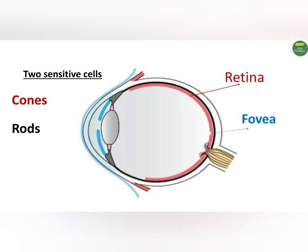Since the eye is linked to the brain, all information from the eyes is coordinated via the optic nerve, which transmits signals from the sensitive cells in the retina to the brain.